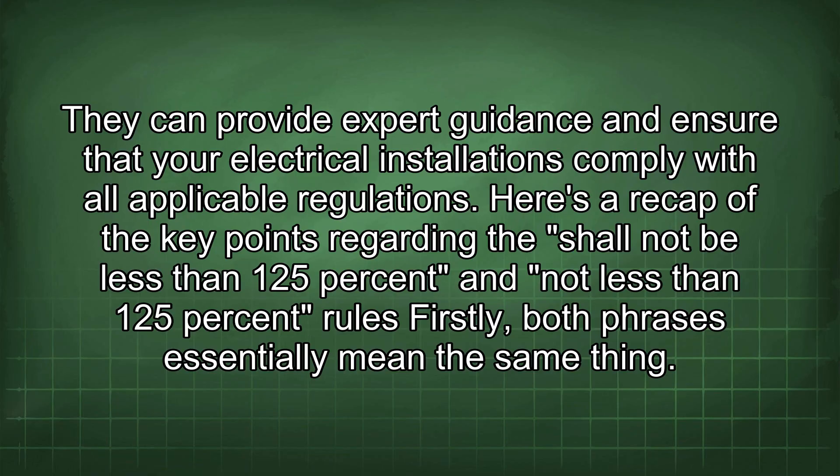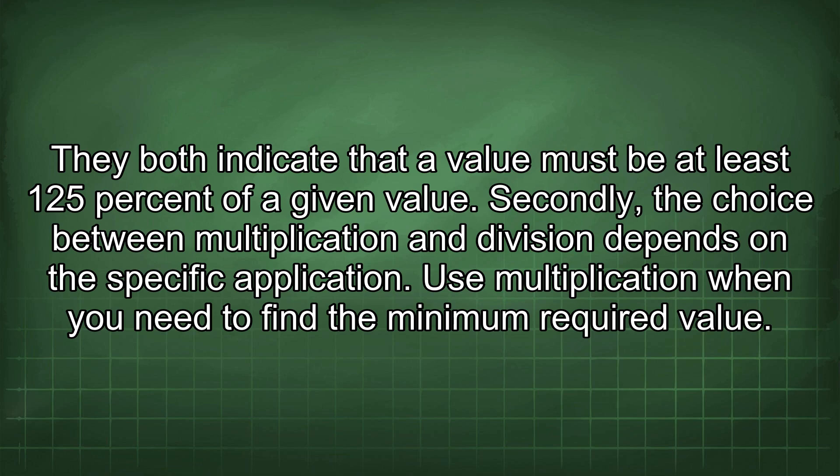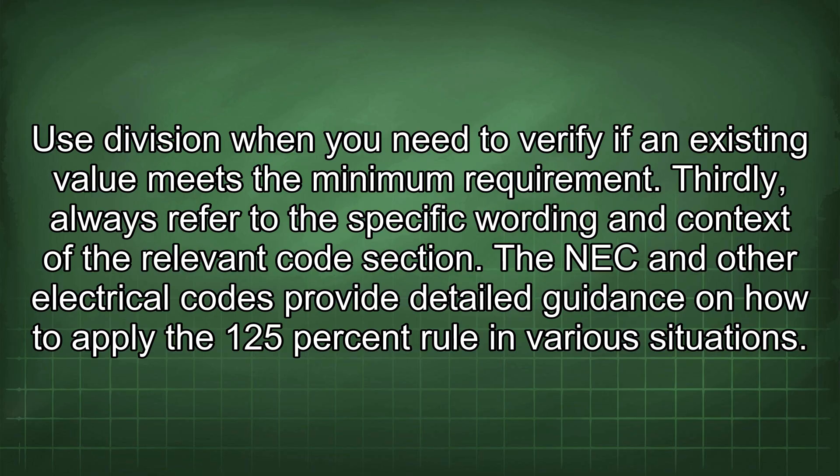Here's a recap of the key points regarding the 'shall not be less than 125%' and 'not less than 125%' rules. First, both phrases essentially mean the same thing — a value must be at least 125% of a given value. Second, the choice between multiplication and division depends on the specific application: use multiplication to find the minimum required value, and use division to verify if an existing value meets the minimum requirement.